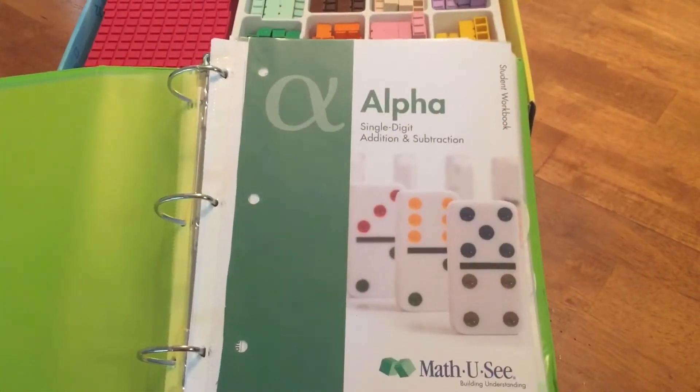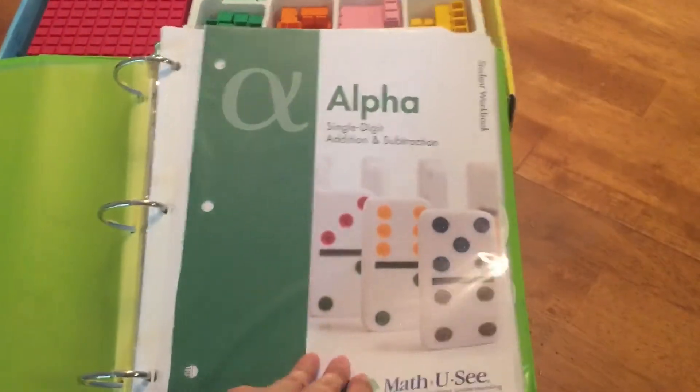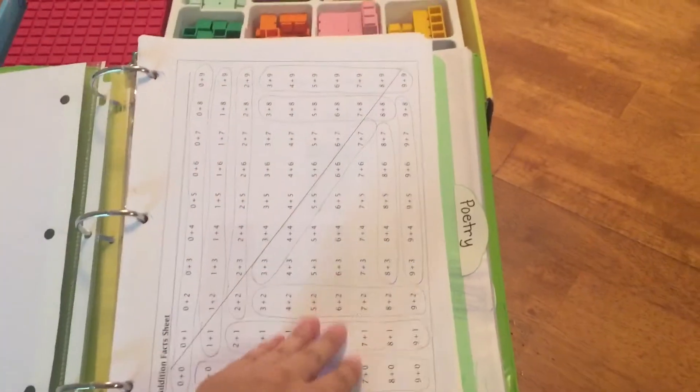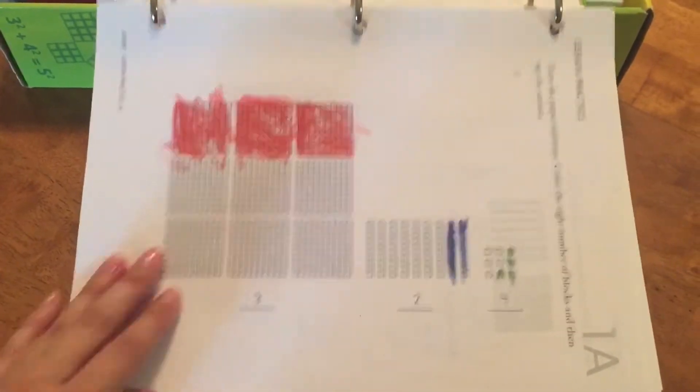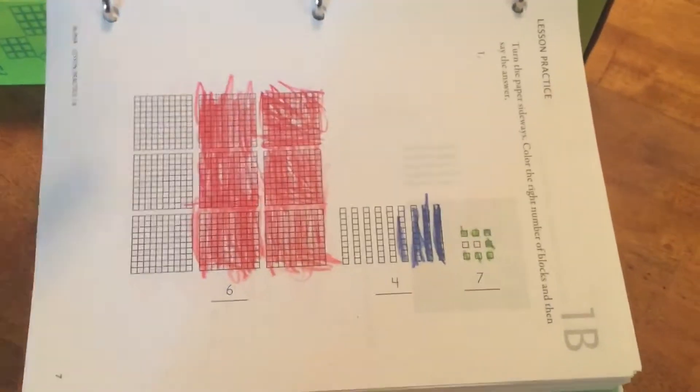This is what the student's workbook looks like. This is an example of place value: ones, tens, hundreds.